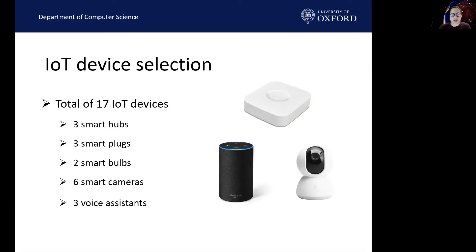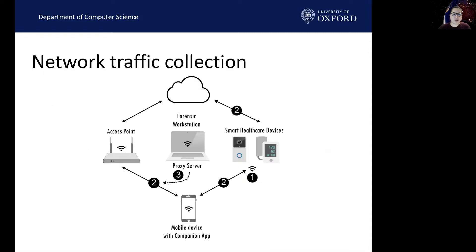We also considered compatibility with virtual assistants. When looking at popular devices, we found that users often favoured devices compatible with Amazon Alexa or Google Home Mini, so if we had a choice between two devices, we chose the one that was compatible. Network traffic was collected from various communication channels in our IoT environment. We first carried out port scanning, then collected network traffic from three different communication channels, used a proxy server to examine HTTPS traffic, and finally established the location of the data.